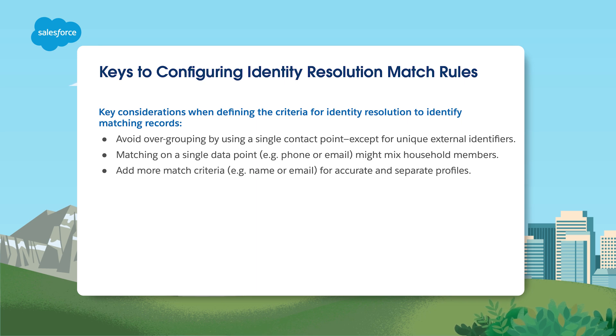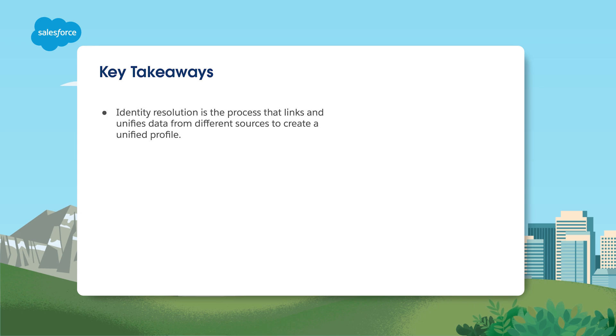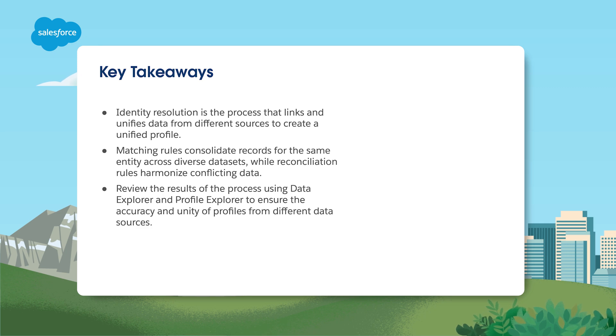Identity resolution is all about bringing data together from different sources to form one unified profile. Matching rules help merge records for the same person, while reconciliation rules remove any conflicts in the data. The results of the identity resolution process can be examined using Data Explorer and Profile Explorer to make sure the profiles from different sources look consistent. To learn more, check out our other videos or search for topics in Salesforce Help, or join us at trailhead.salesforce.com.